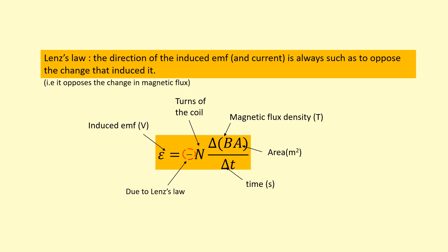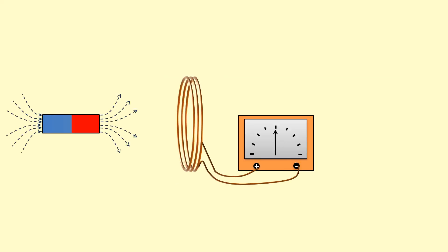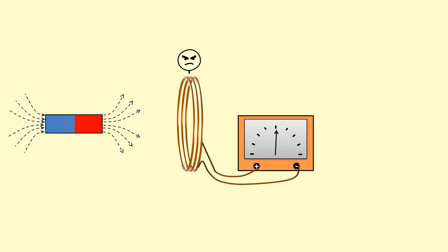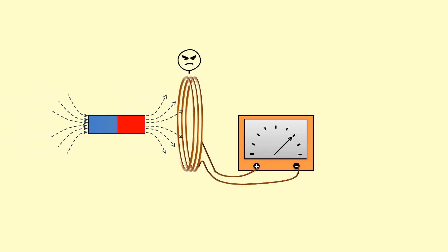Here's Faraday's Law, and what Lenz's Law adds is a negative sign in front of it. Think of the coil as being a person who doesn't like change. Right now the coil is happy because there's no increase or decrease in flux, but watch what happens when I move the magnet closer — there's going to be an increase in flux acting towards the right.